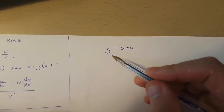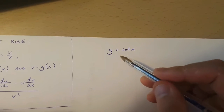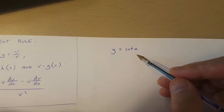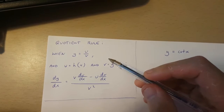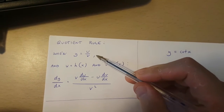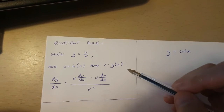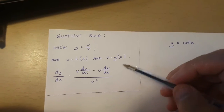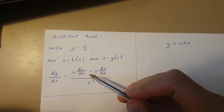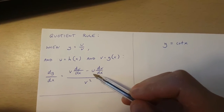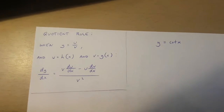Hello, in this video I'm going to be showing you how to differentiate y equals cot x using the quotient rule. Now the quotient rule goes like this: when y is u over v, and u is a function of x and v is a function of x, then dy over dx is v times du over dx minus u times dv over dx, all over v squared.